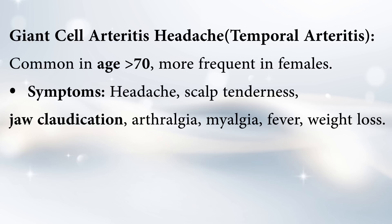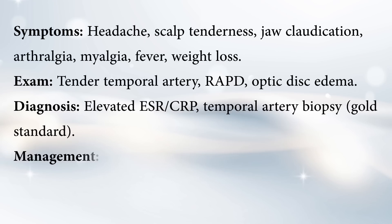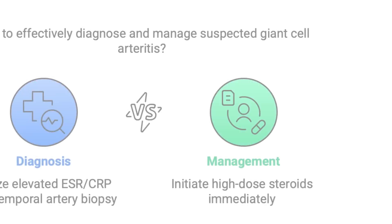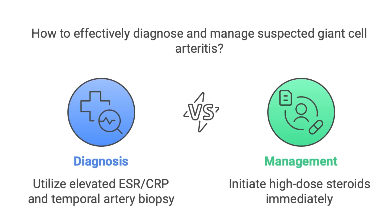On exam, a tender temporal artery — the one that runs along the side of your forehead — is a key finding. It also mentions RAPD, which stands for relative afferent pupillary defect, found during an eye exam, and maybe swelling of the optic nerve called optic disc edema. Diagnosis usually involves blood tests for inflammation like ESR and CRP, but the only way to know for sure is a temporal artery biopsy. Treatment: start high-dose steroids right away if you suspect giant cell arteritis, even before you get the biopsy results back, to prevent bad complications like vision loss.